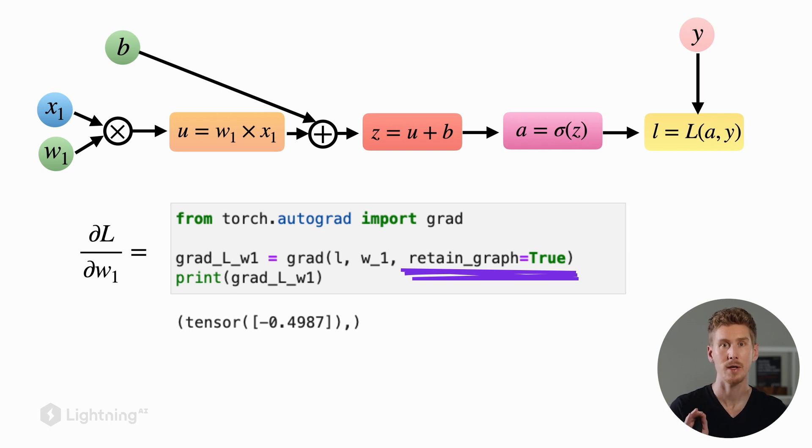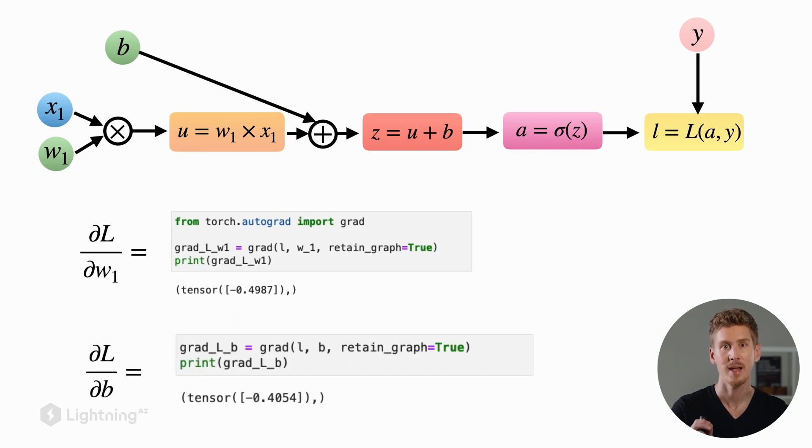Retain_graph equals true means that we keep the computation graph in memory. Otherwise, PyTorch would deconstruct the computation graph that we previously built. The reason why we want to have this computation graph in memory a little bit longer is that we also want to compute the partial derivative of the loss with respect to the bias unit. Using the same procedure, we pass l and the variable b to the loss function to compute the partial derivative of the loss with respect to the bias unit.